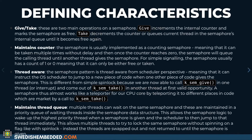Some of the defining characteristics of the semaphore is that we have the give and take functions — we can give the semaphore, make it available, and we can take it, which means that it's not available. We can also have a counter which can have an arbitrary integer value, so we can take the semaphore multiple times before it becomes unavailable.